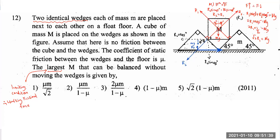The frictional force is the limiting frictional force FL, because they ask for the largest capital M that can be kept at rest — a limiting condition. The object is at the verge of slipping. The forces on the wedge are: R2 sin 45° and mg vertically, R3 upward, and FL and R2 cos 45° horizontally.